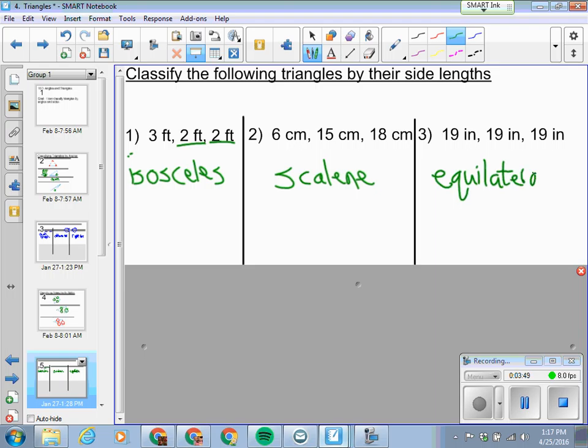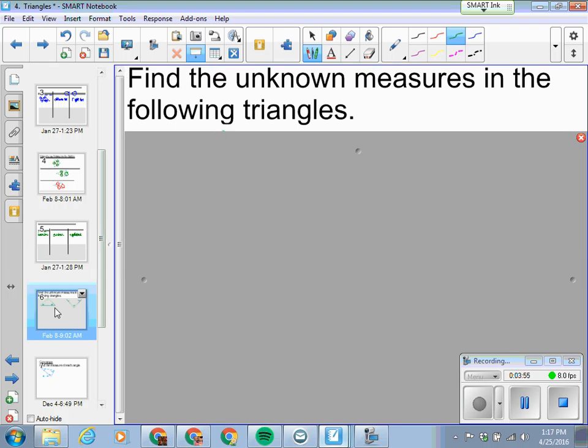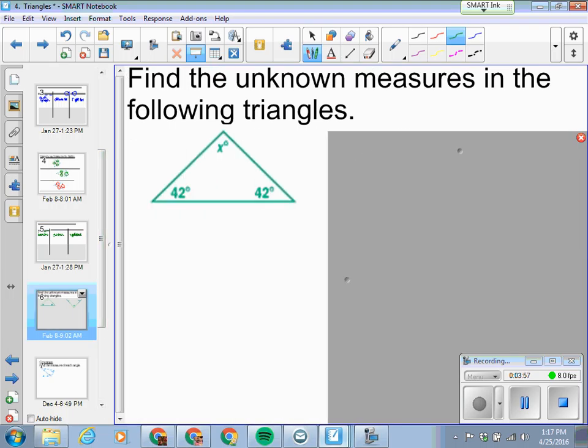The second triangle, we have no sides of equal length. This one is scalene. And then the last one, all sides are equal. So this is an equilateral triangle.